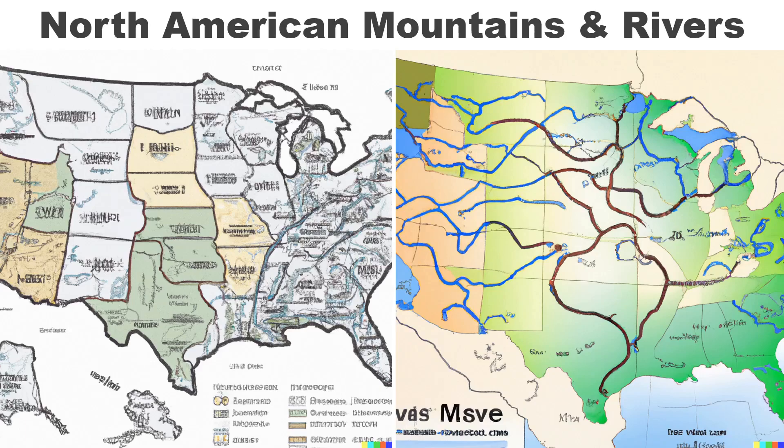Here we have North American mountains on the left and North American rivers on the right. The bias against Canada and Mexico continues. I don't understand the color schemes, and I don't think either shows what they're supposed to in any geographically correct way, although both maps look nice. Interesting how US state borders are drawn so differently between the two maps — one with overly distorted boundaries and the other with overly straight boundaries.